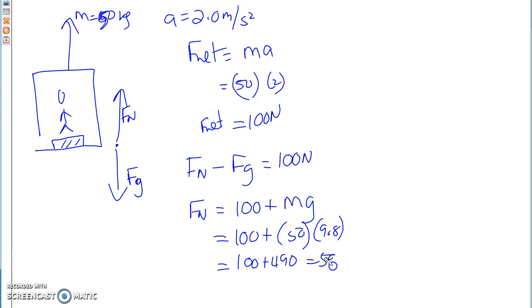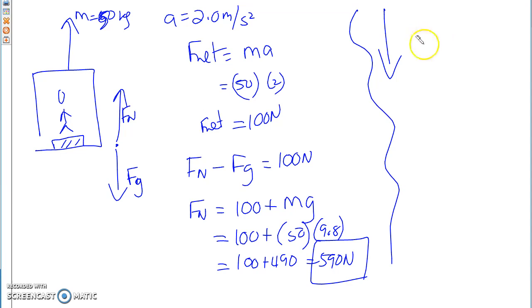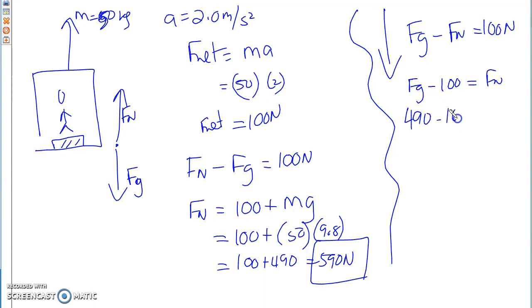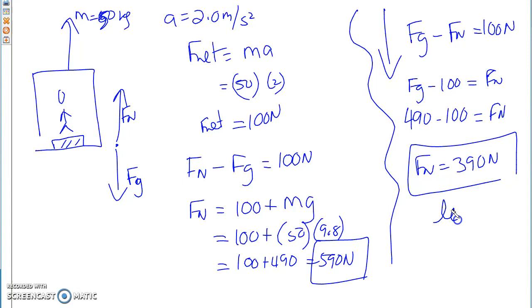What if my elevator is accelerating downward? Now it's FG minus FN equals 100 newtons, so FN equals FG minus 100, which is 490 minus 100 equals 390 newtons. You will weigh less when your elevator is going downward, and weigh more if your elevator is accelerating upward. So your weight actually changes depending on the elevator's acceleration.